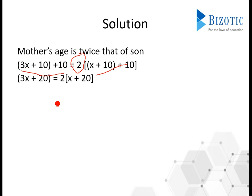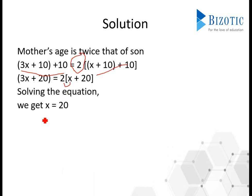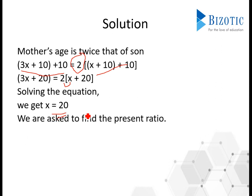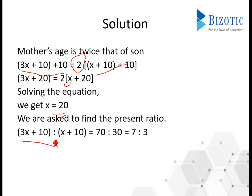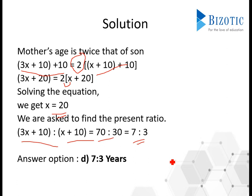That gives us mother's age as 3x plus 20 and son's age as x plus 20. Since the mother's age is twice the son's after 10 years: 3x plus 20 equals 2 times x plus 20, which gives 2x plus 40. So 3x minus 2x equals 40 minus 20, which equals 20, and x equals 20. The present ratio is 3x plus 10 to x plus 10. Substituting x equals 20 gives the ratio as 7 is to 3. The answer is option D, 7 is to 3.